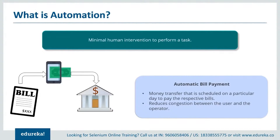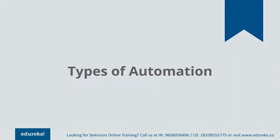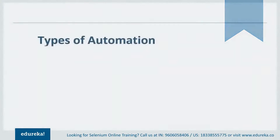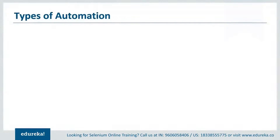Isn't it interesting the way automation has evolved? Now that you've understood what is automation, let's try to understand the different types of automation that exist. There are basically three types of automation depending on the process which the user defines: fixed automation, programmable automation, and flexible automation.